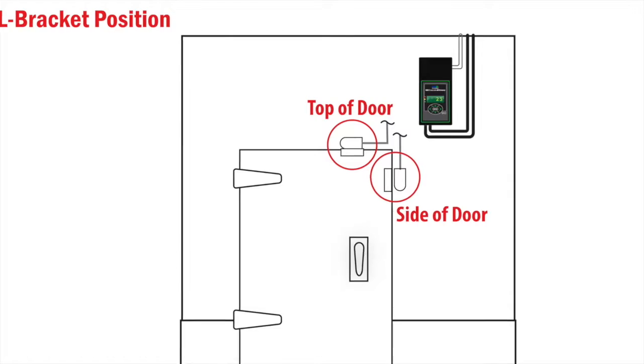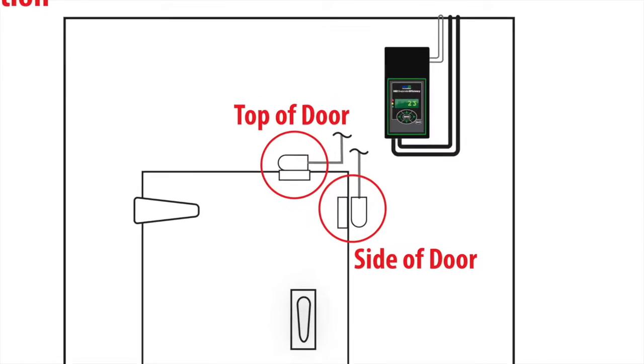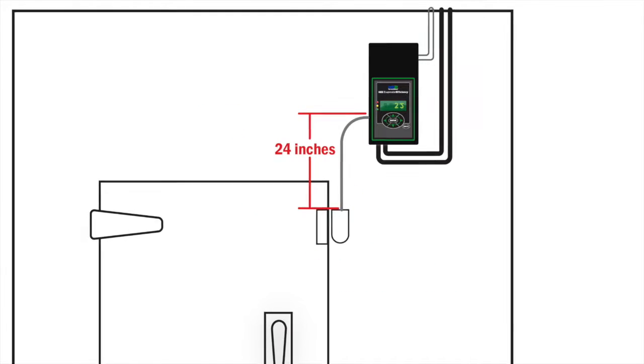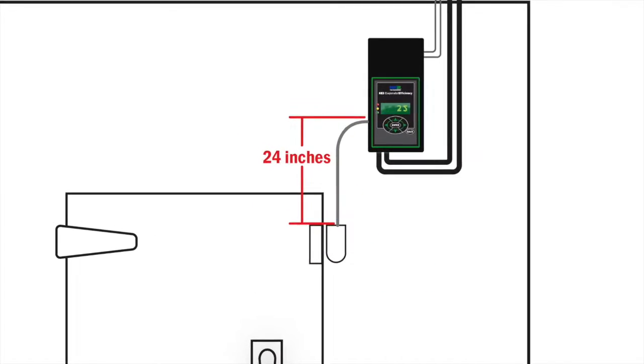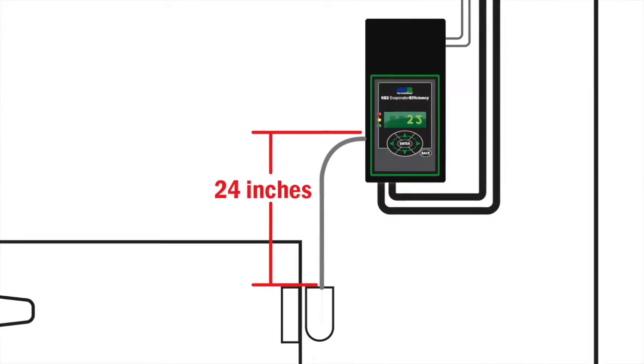Now let's select the position on the door of the walk-in that is on the opening side of the door. It can be on the top or the side of the door, but remember that the wires on the door switch are 24 inches long. So if possible, you want to select a spot where the wires can reach the controller without being extended.